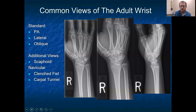Starting off, it's important that you're ordering the right films. The common three views of the wrist are a PA or posterior-anterior, a lateral, and an oblique. Make sure those are the films you're typically getting. Some organizations' protocols only start with a two-view of the wrist, and as I'll show you later, they can miss subtle findings without multiple views. We'll also talk about additional views including the scaphoid or navicular view, the clenched fist view, and the carpal tunnel view.